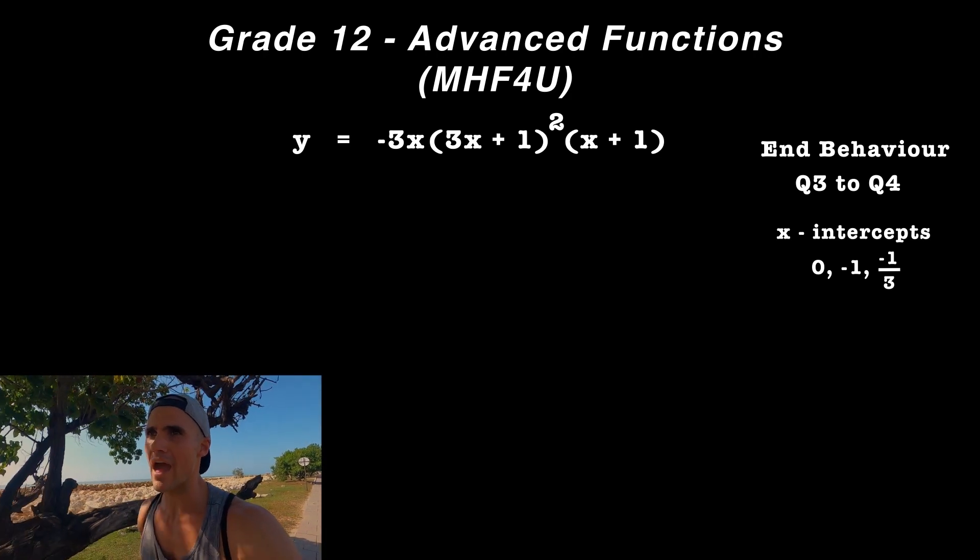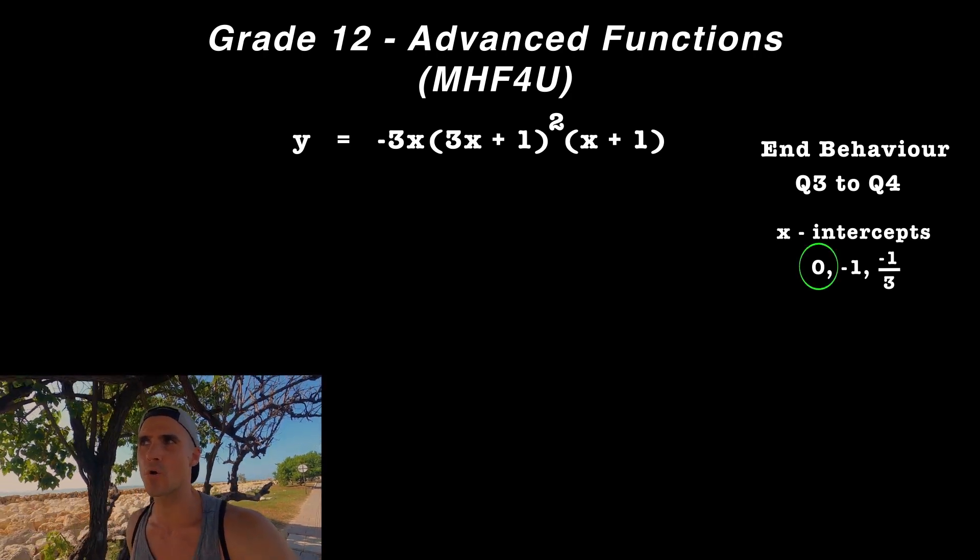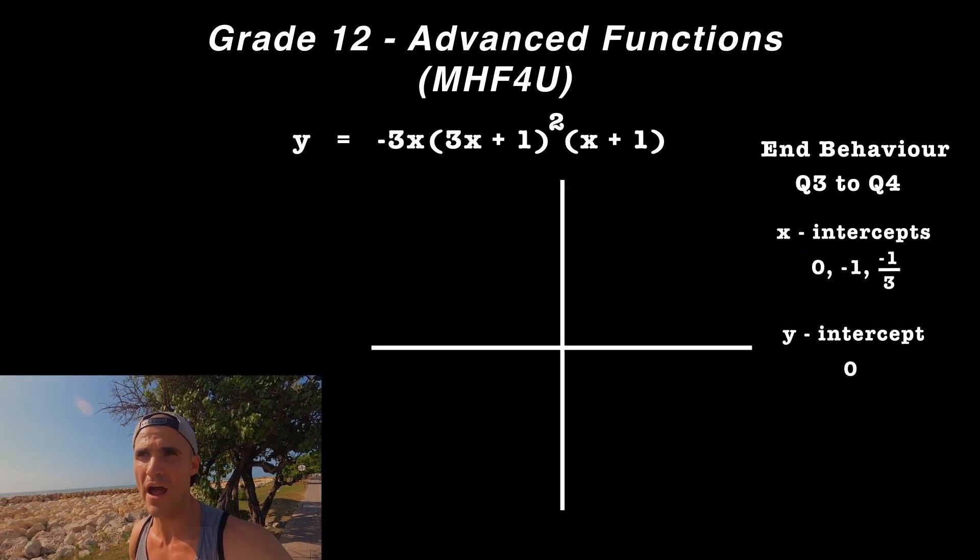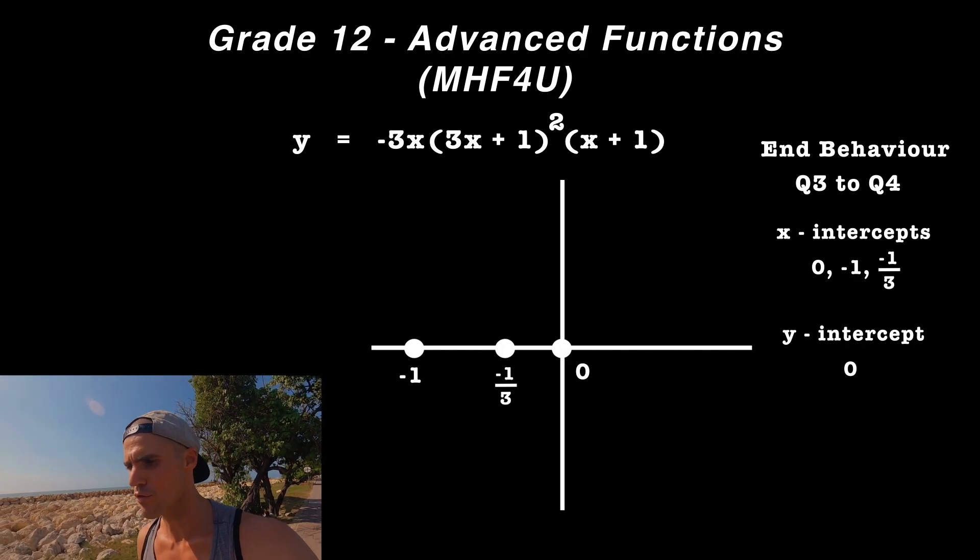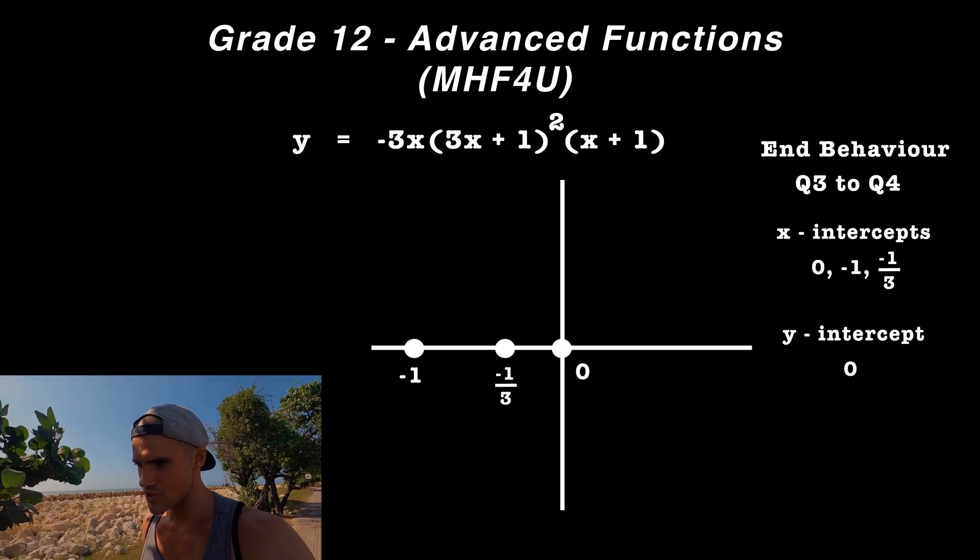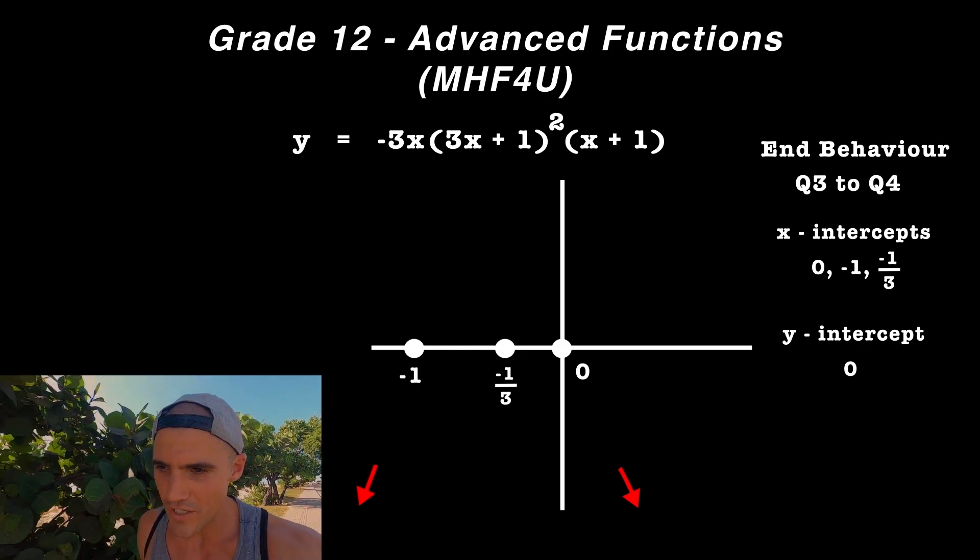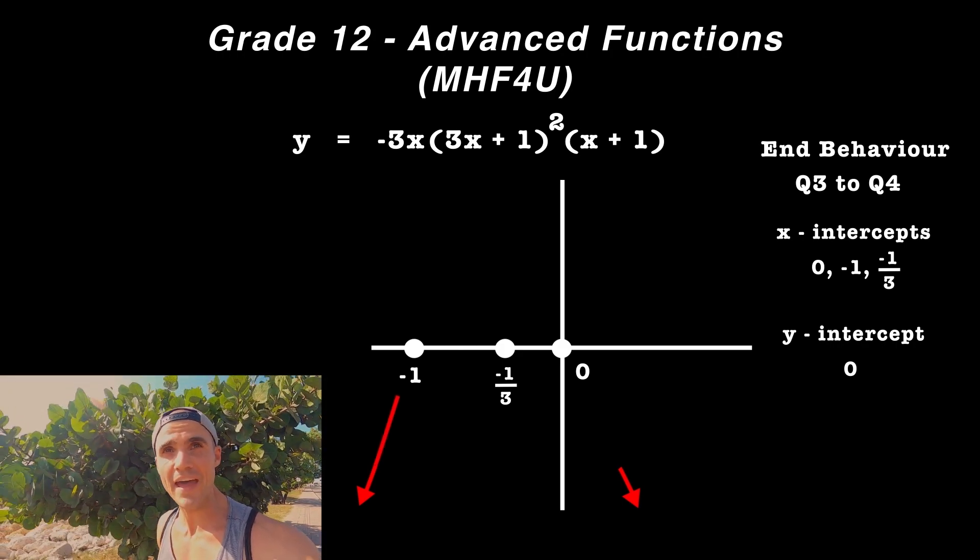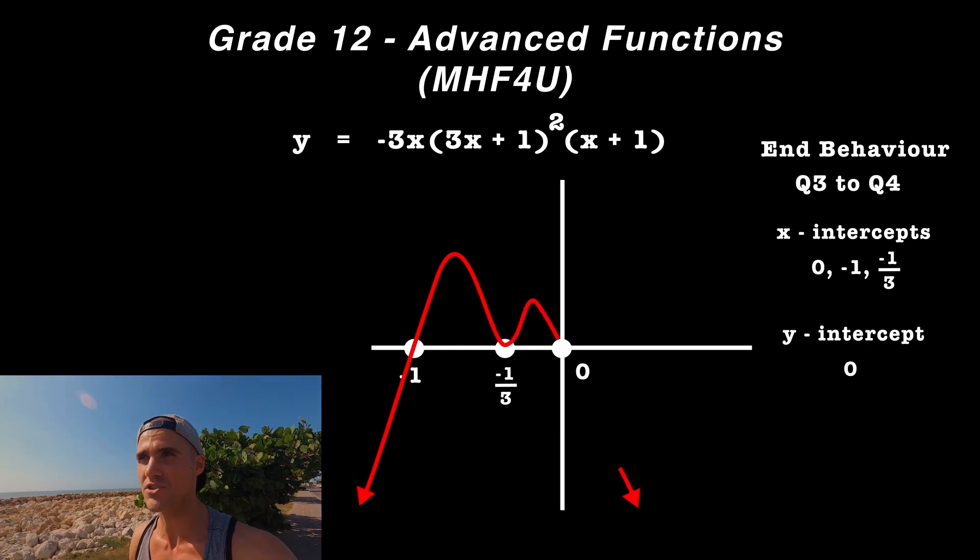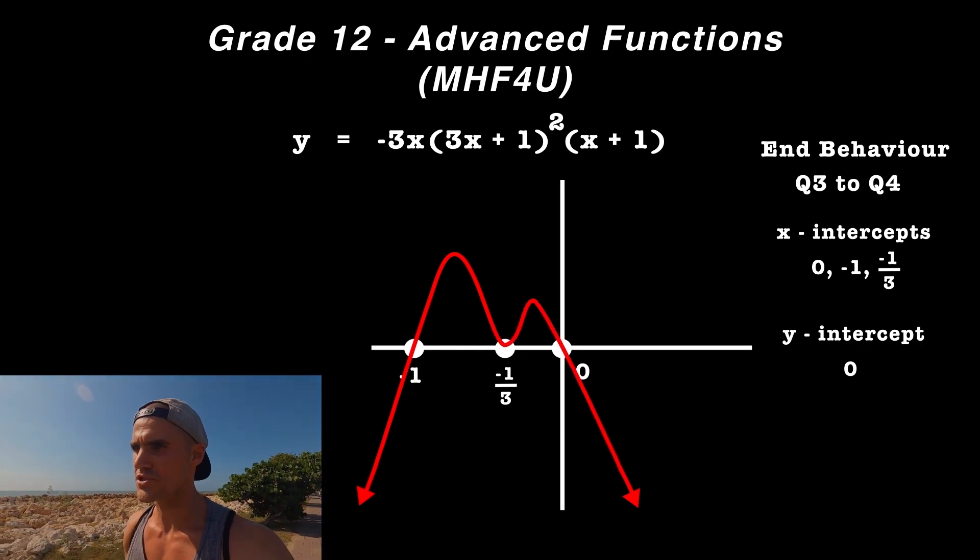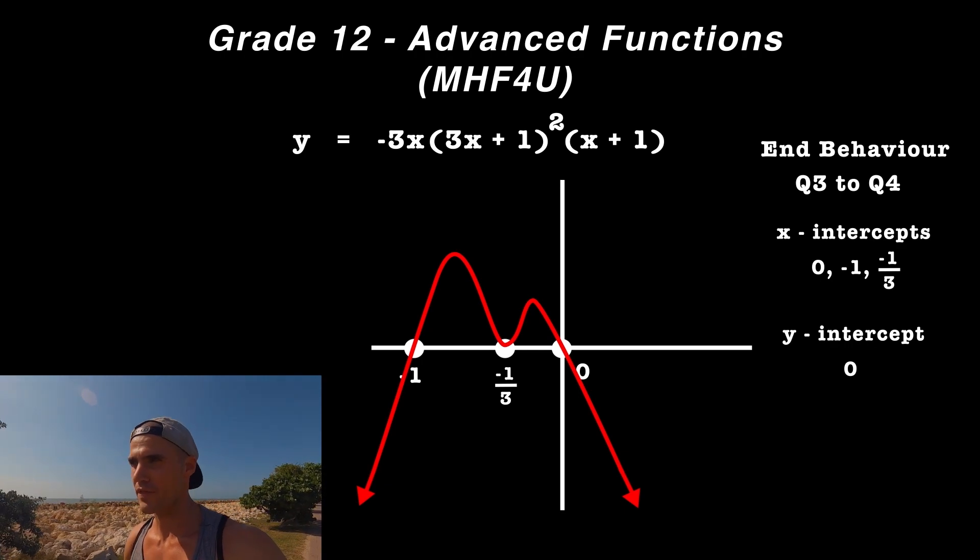We have our end behaviors and intercepts. When you connect everything, remember at -1/3, the graph bounces off. It goes through -1, then through 0, and we end up with our polynomial. Thank you.